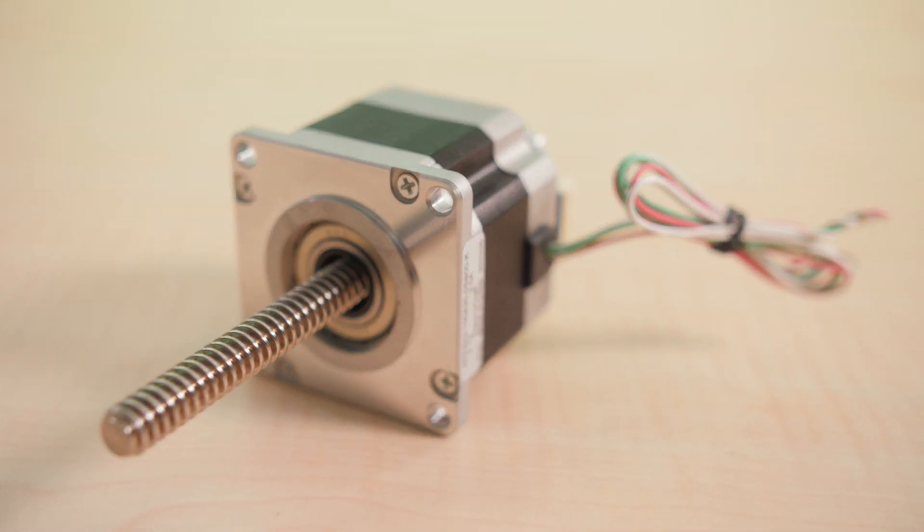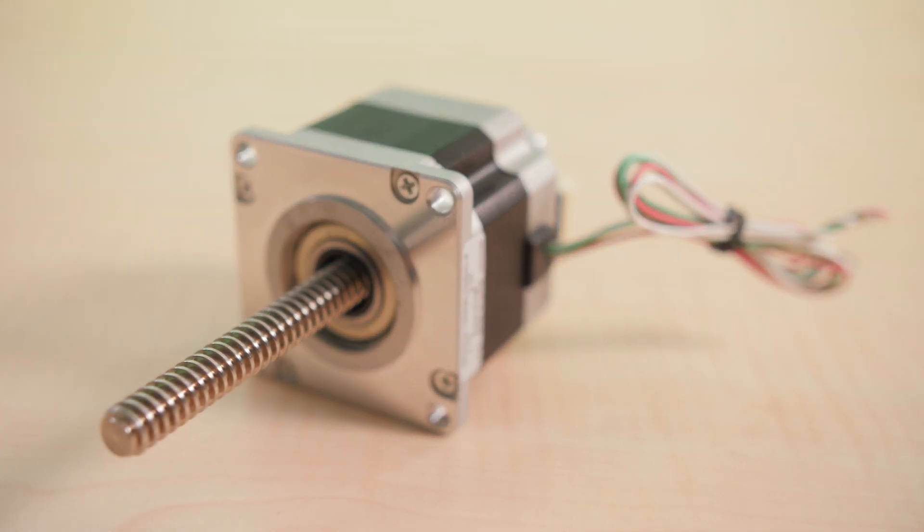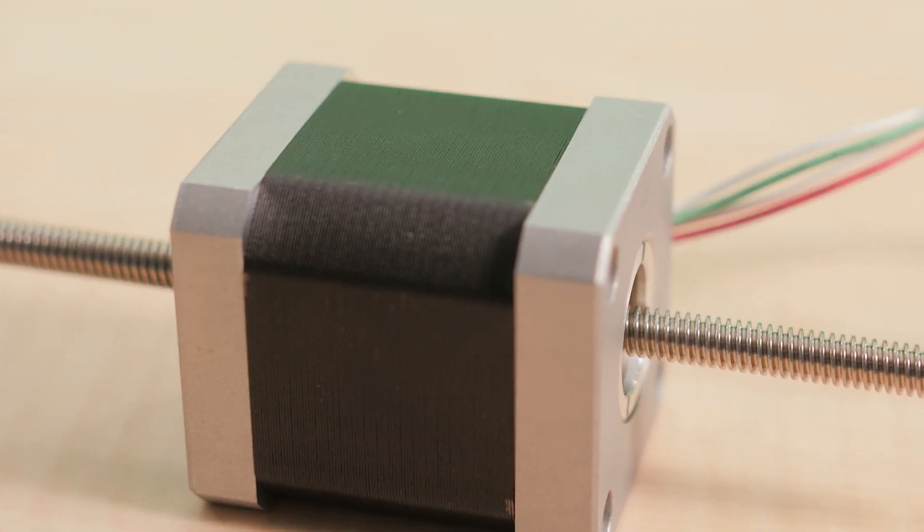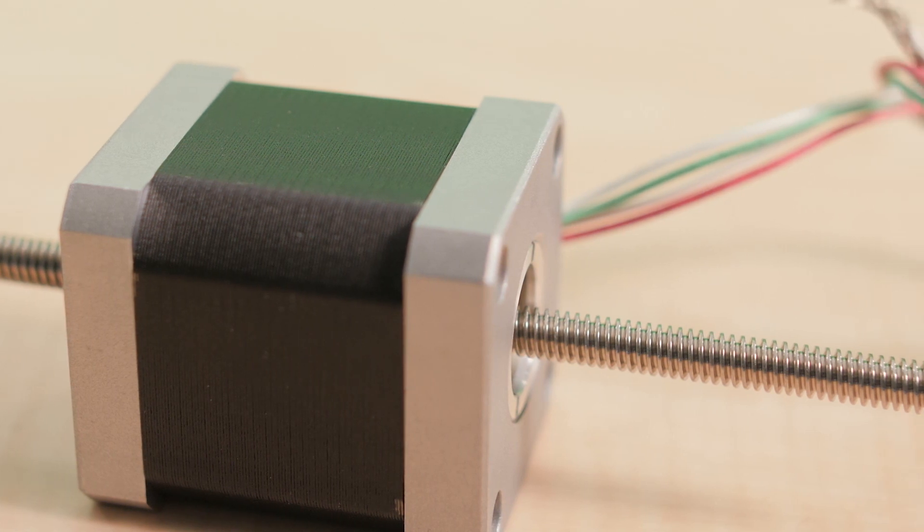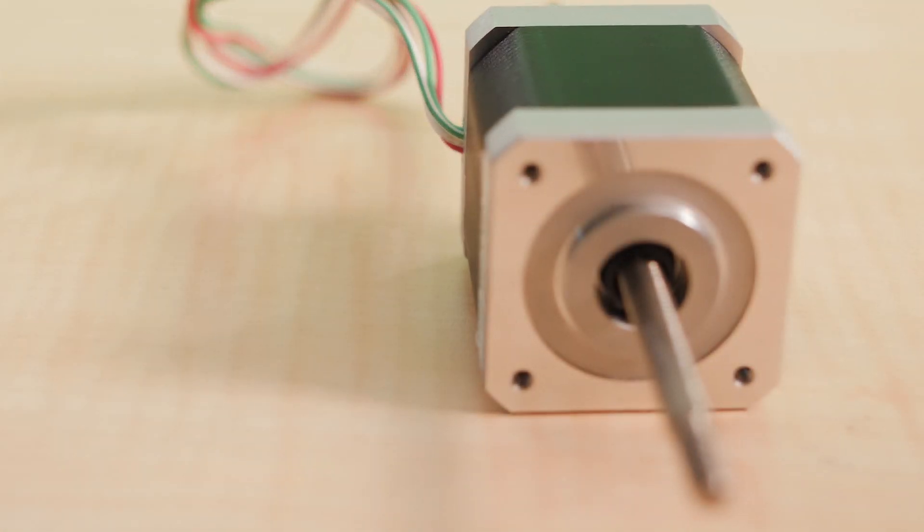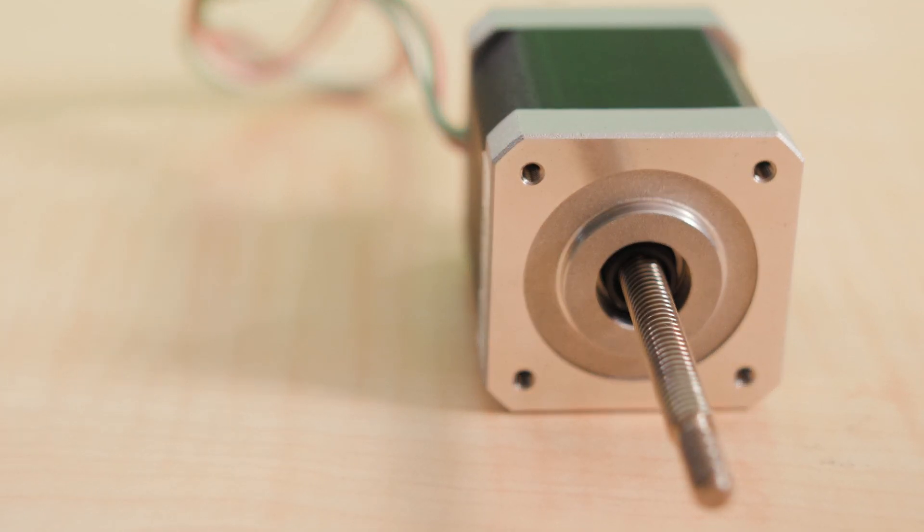These new linear actuators are highly configurable and available with a variety of imperial or metric lead screw options. They feature resolutions ranging from 0.006mm to 0.06mm per step, with an output force of up to 1779 Newtons or 400 pounds of force.